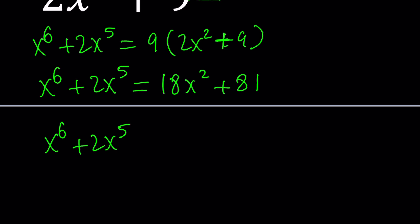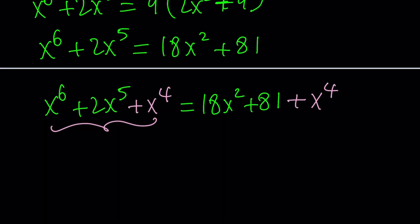First of all, let me write the right-hand side as well because I'm going to add it to both sides. And obviously, they are equal. So, maybe... Okay. I can add it at the end. That's fine. So, now, we're going to be adding x to the 4th to both sides. Why? Because when you add x to the 4th to both sides, this expression becomes a perfect square. Do you know why? Because it becomes x to the 3rd plus x squared quantity squared.